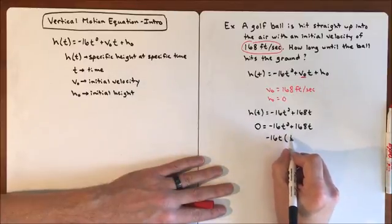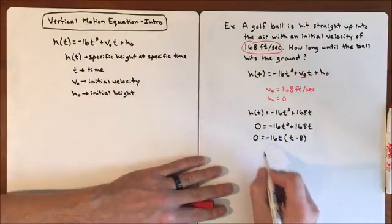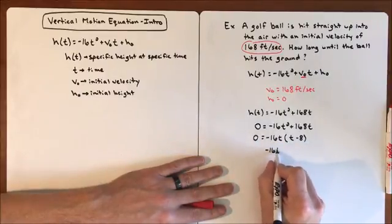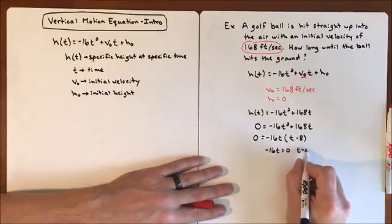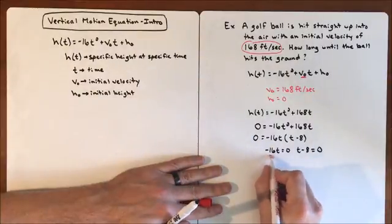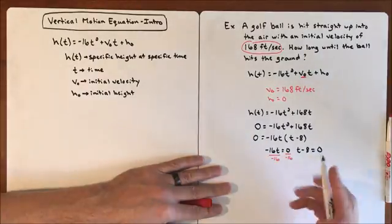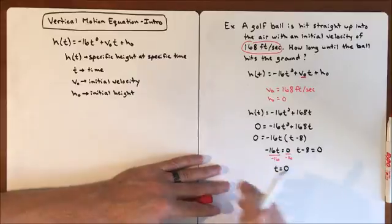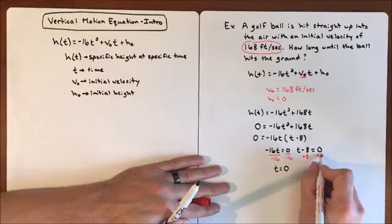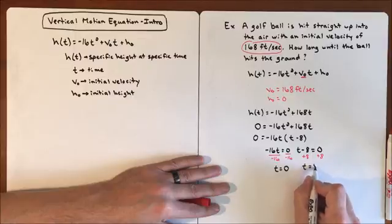We'll factor out negative 16t so we have a positive variable inside the parentheses. That gives us negative 16t times the quantity t minus 8, equals zero. Now we set each factor equal to zero. For the first factor: divide both sides by negative 16, giving t equals 0. For the second factor: t minus 8 equals 0, so add 8 to both sides, giving t equals 8.